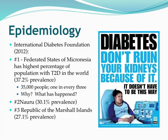Nauru is number two in the world with 30.1% prevalence, and the Republic of the Marshall Islands is number three with 27.1% prevalence. These are ranked globally, not just in the Pacific. The top three nations in the world for type 2 diabetes prevalence are found right here in the Northern Pacific.